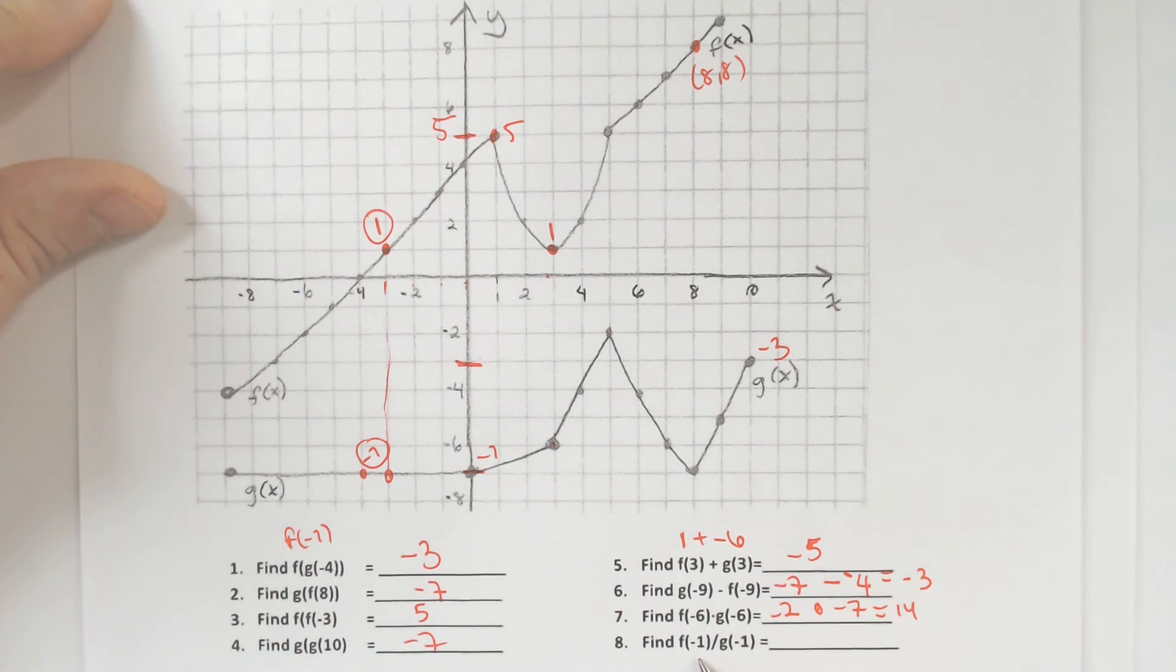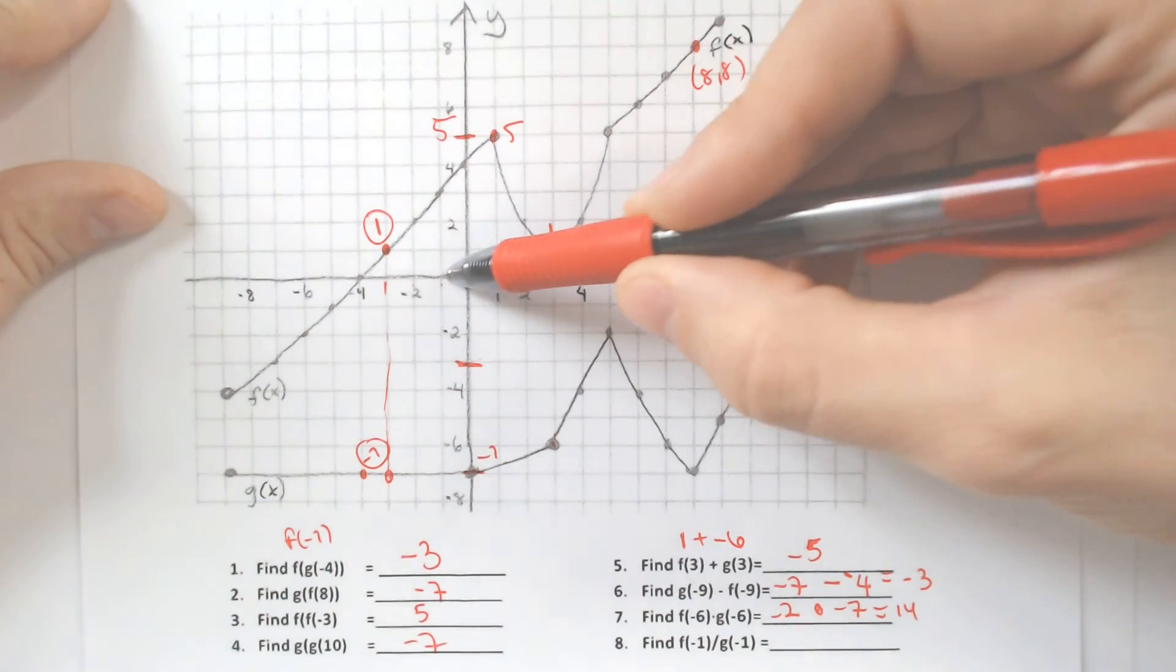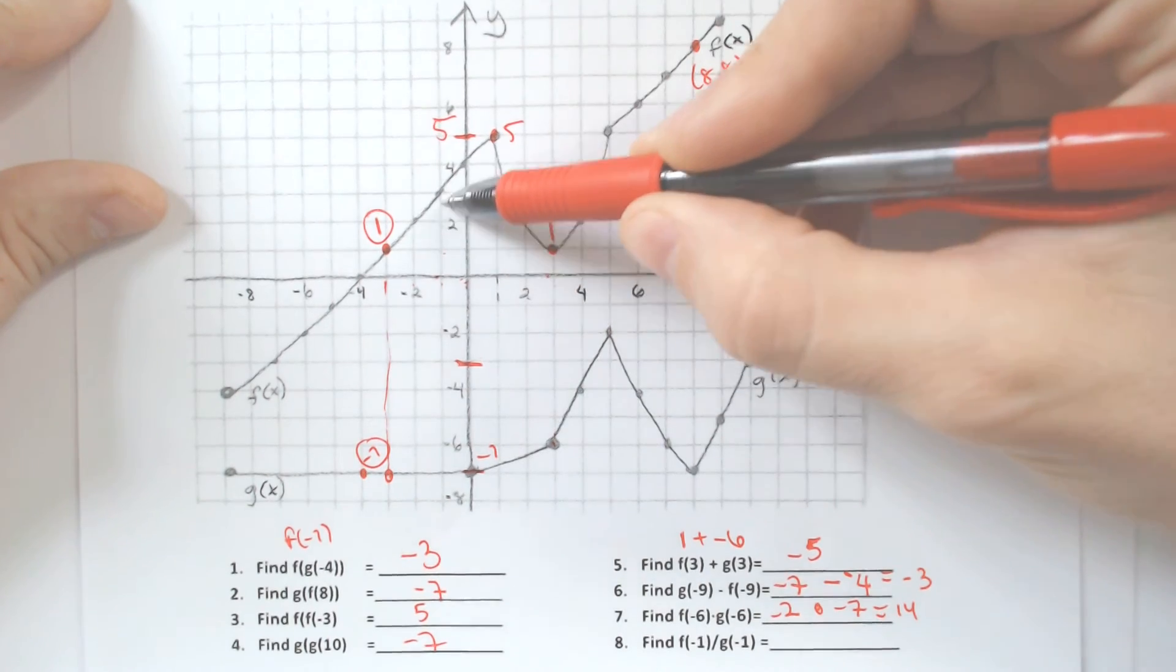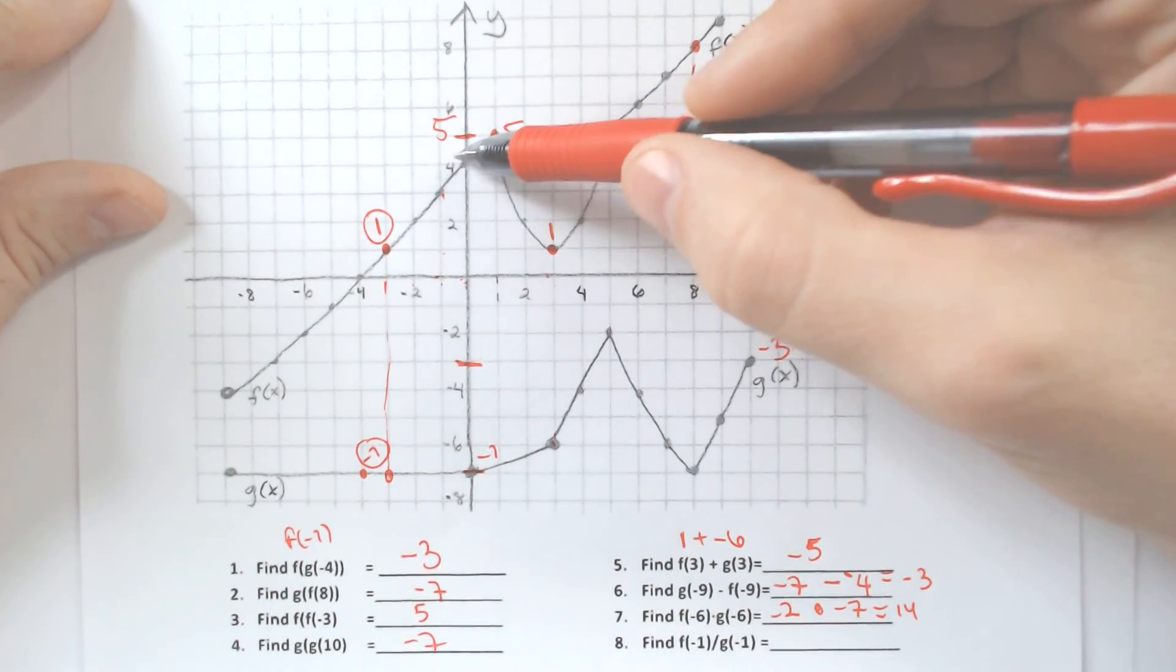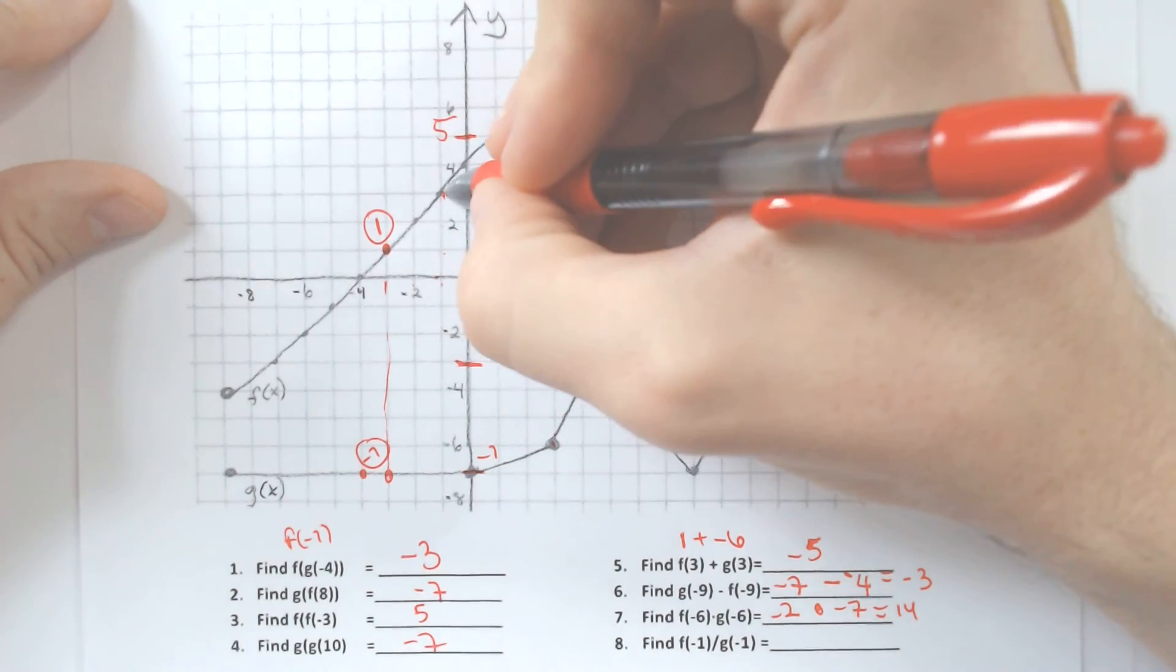f of negative 1 divided by g of negative 1, the last problem of the day. f of negative 1 is up at 1, 2, 3. I almost counted to 4 because I saw the 4 right there. So it's at 3.